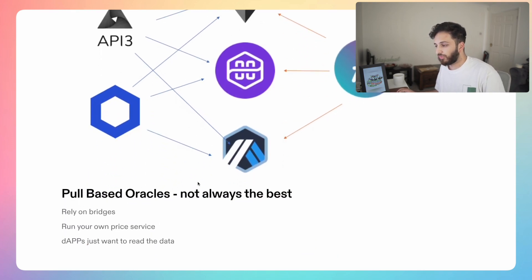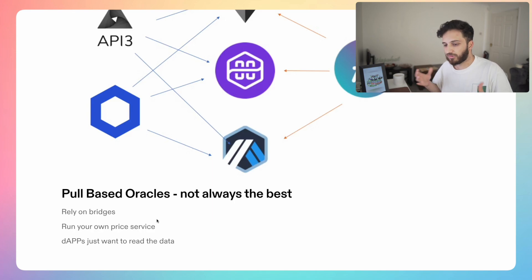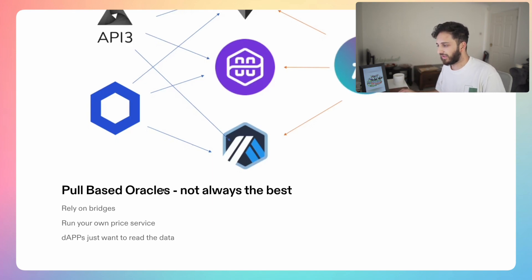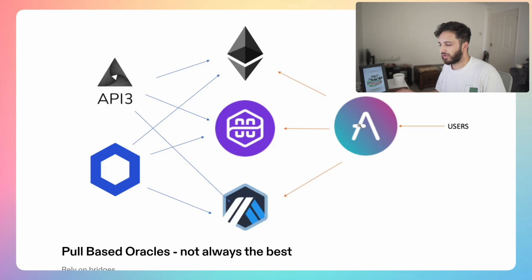Pull-based oracles are not always the best because, number one, you have to rely on various bridges, and number two, applications often have to run their own price service, which can complicate their architecture. DApps don't really want to do this — they just want to read the data and make it as simple as possible. They don't have the infrastructure and don't want a more complicated experience or increased gas fees. That's why in the majority of cases, especially in DeFi when using an application like Aave, it really doesn't make sense to have a pull-based oracle.